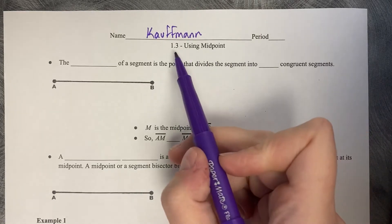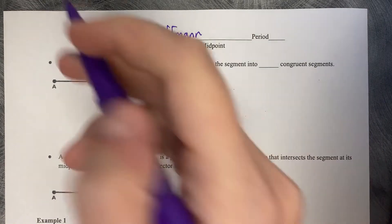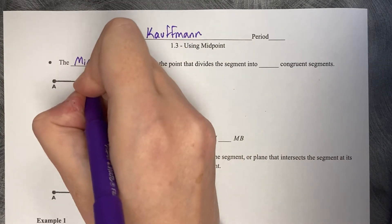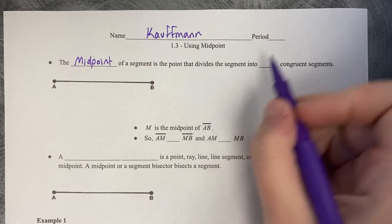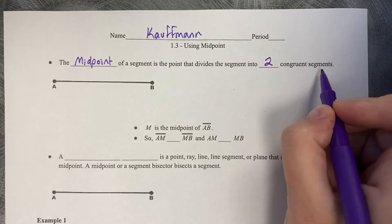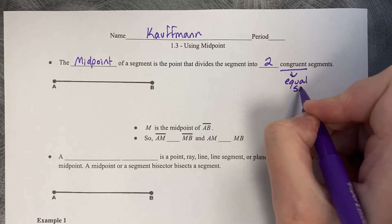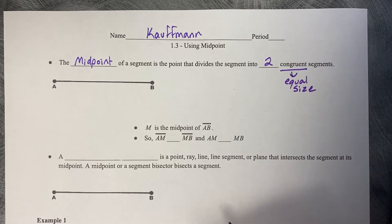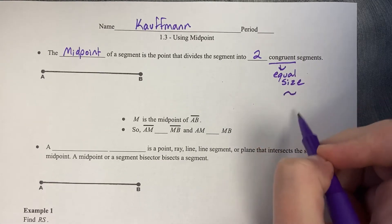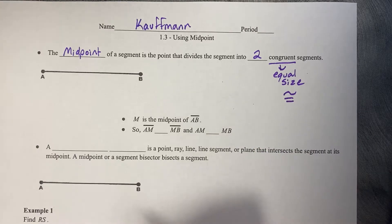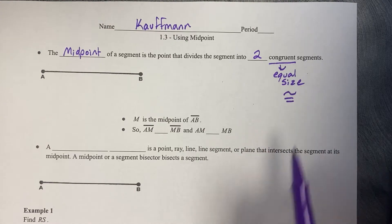We're going to be talking about 1.3, using midpoint today. The midpoint of a segment is the point that divides the segment into two congruent segments. Congruent means equal size, and the congruent symbol looks like a squiggle mark and an equal sign below it, because it's very similar to equal itself. It just means equal in size.